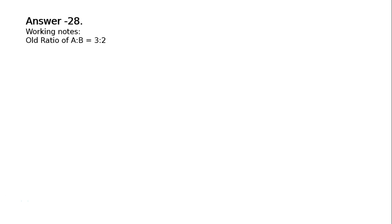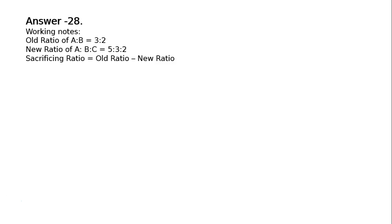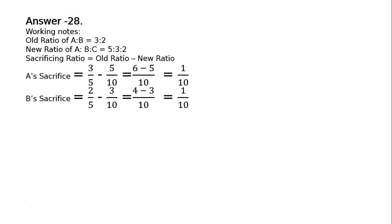Old ratio of A to B is 3:2. New ratio of A to B to C is 5:3:2. Sacrificing ratio equals old ratio minus new ratio. A's sacrifice = 3/5 − 5/10 = 6/10 − 5/10 = 1/10. B's sacrifice = 2/5 − 3/10 = 4/10 − 3/10 = 1/10. Therefore, the sacrificing ratio of A to B is equal to 1:1.